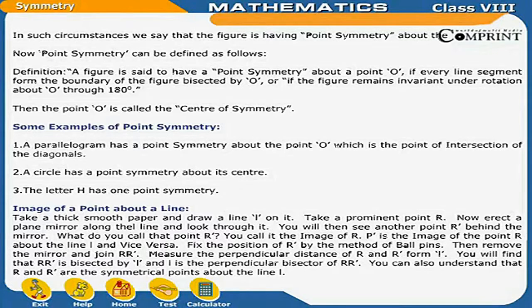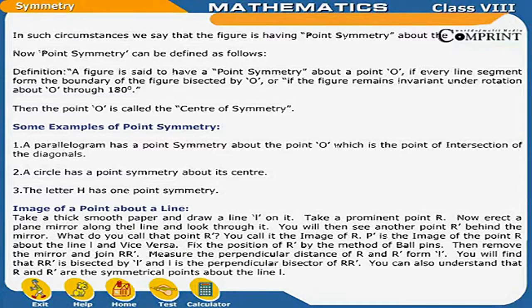Image of a point about a line. Take a thick smooth paper and draw a line L on it. Take a prominent point R. Now erect a plain mirror along the line and look through it. You will then see another point R' behind the mirror. You call it the image of R. R' is the image of the point R about the line L and vice versa. Fix the position of R' by the method of ball pins. Then remove the mirror and join R and R'. Measure the perpendicular distance of R and R' from L. You will find that RR' is bisected by L, and L is the perpendicular bisector of RR'. You can also understand that R and R' are symmetrical points about the line L.